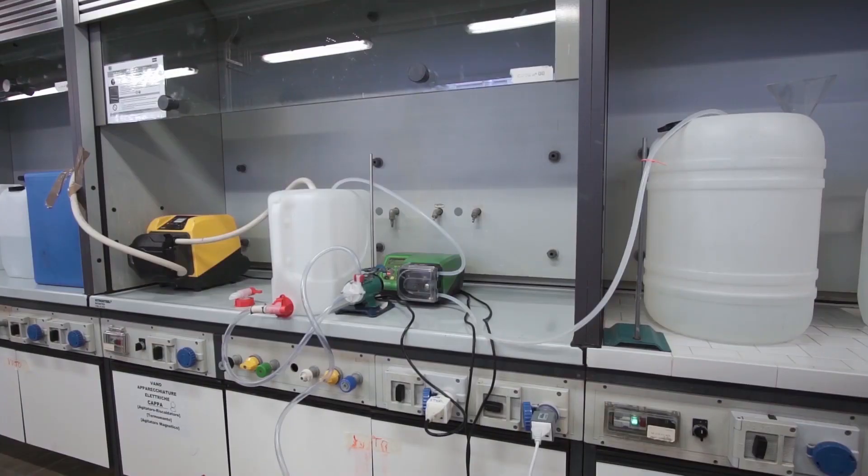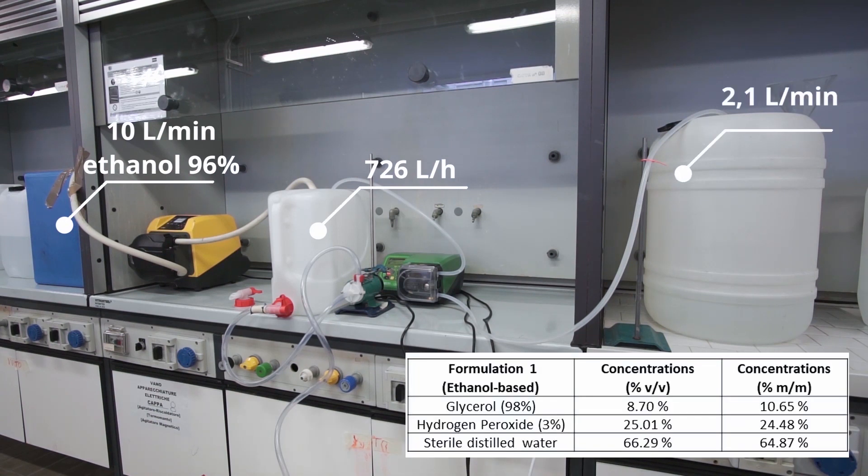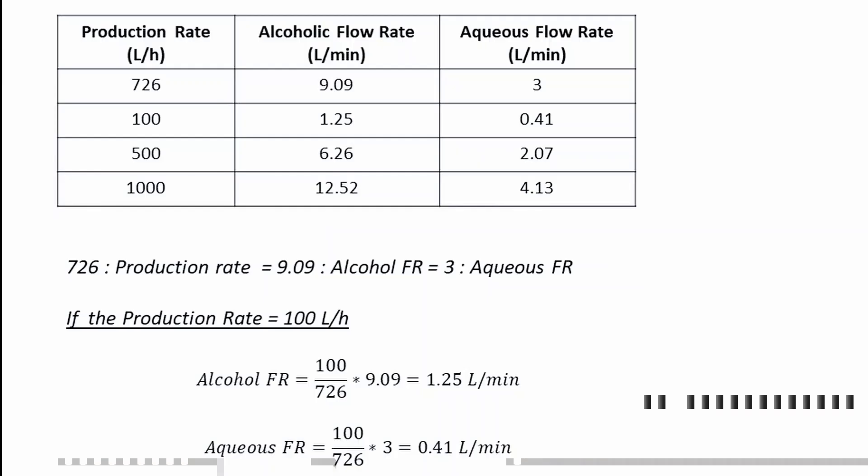In the video, we show a plant with a production of 726 liters per hour of sanitizing liquid. This is possible having set the volumetric flow rate of the alcoholic solution at 10 liters per minute and the aqueous one at 2.1 liters per minute. To vary the final productivity, it is sufficient to modify the flows according to the formula shown in the attached document.